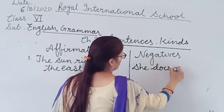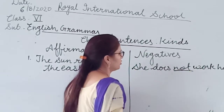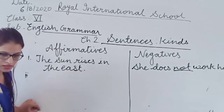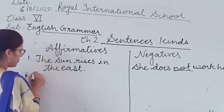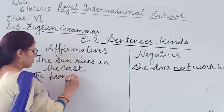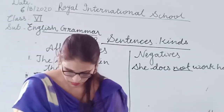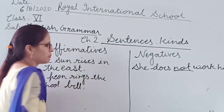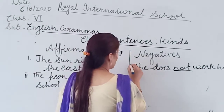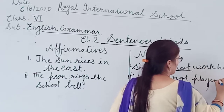Second affirmative example: 'The peon rings the school bell' - the peon rings the school bell. Another negative example: 'I am not feeling well,' or 'We are not playing chess.'